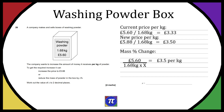Here, 1.68 kg × x is the new weight, where x is an unknown multiplier — not itself the answer to the question, but representing what we multiply 1.68 kg by to make it smaller. We want to find this unknown so we can work out the percentage change. The whole expression equals the target price of £3.50 per kilo.